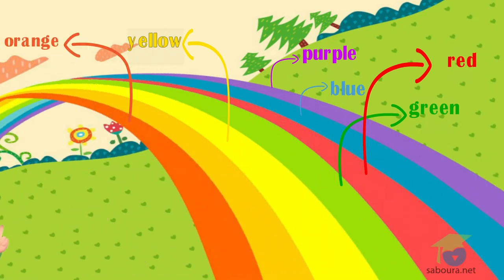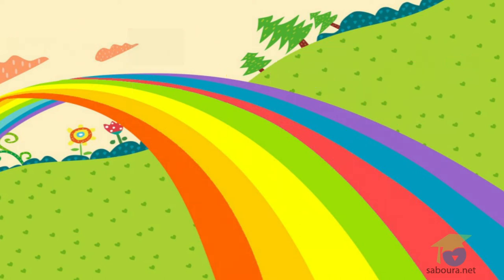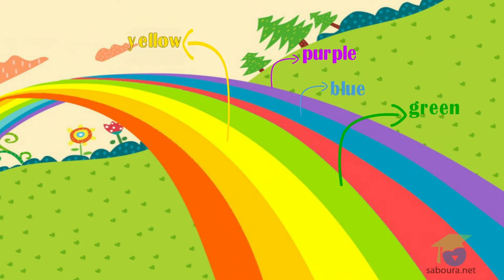Come and count the colors with me. How many colors can you see? Rainbow purple. Rainbow blue. Rainbow green and yellow too. Rainbow orange. Rainbow red. Rainbow shining overhead.